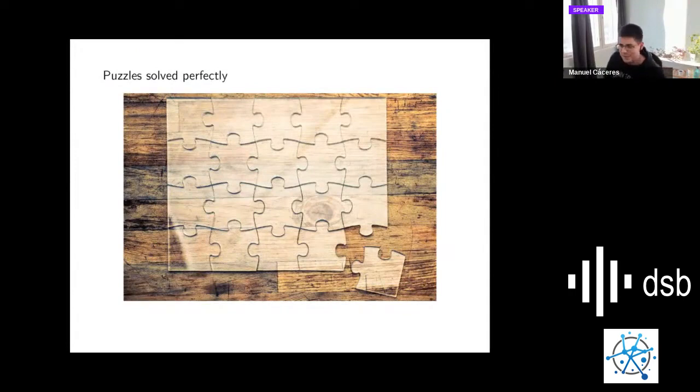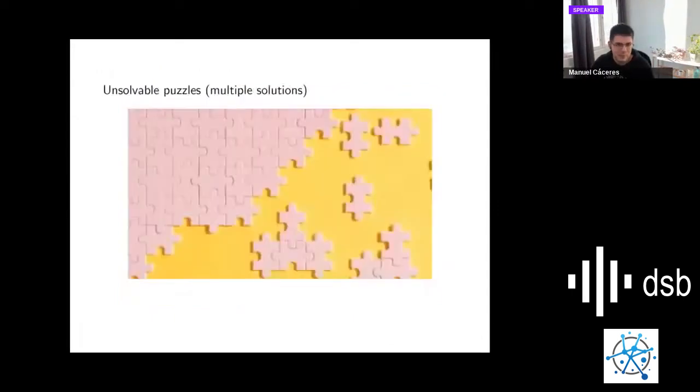Another example is multi-assembly, which is a generalization of the assembly problem, where instead of only one sequence, we have different sequences, and we have reads mixed from all these sequences. From this mixed set of reads, we want to reconstruct all the input genomes. Coming back to puzzles, some puzzles are solved perfectly.